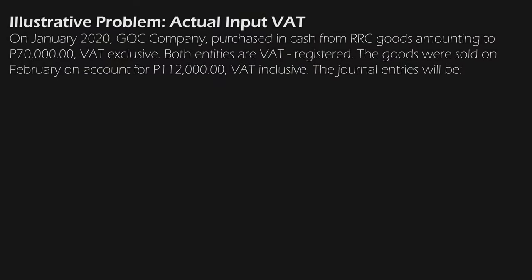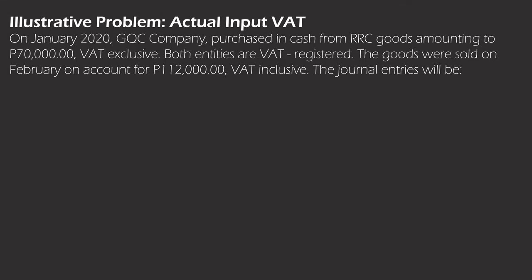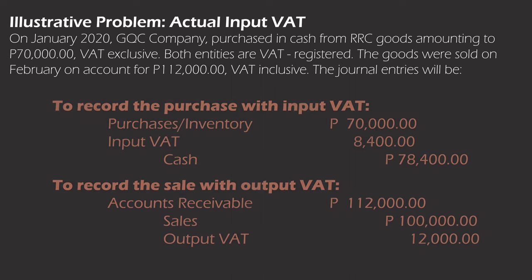Now let's go to the illustrative problems. Take note of the different journal entries we will be doing depending on what type of input VAT is involved. For our first illustrative problem on actual input VAT: a company purchased in cash from another company goods amounting to 70,000 VAT exclusive. Both entities are VAT registered. The goods were sold on the following month on account for 112,000 VAT inclusive. To record the purchase with input VAT: debit purchases/inventory 70,000 and input VAT 8,400; credit cash 78,400.